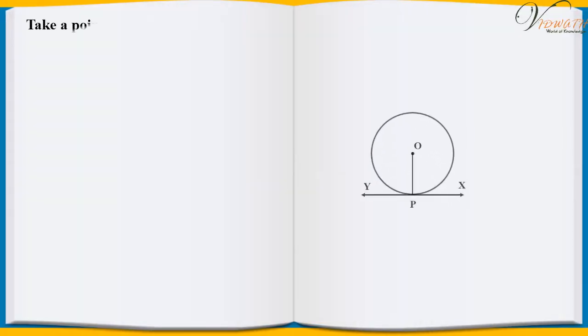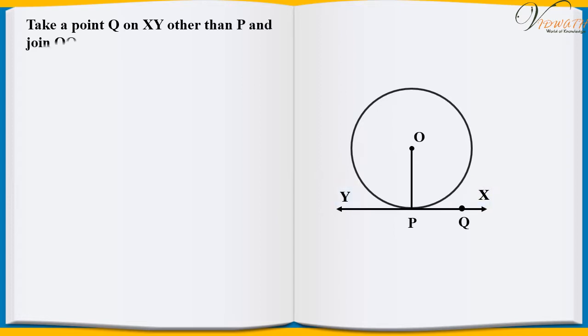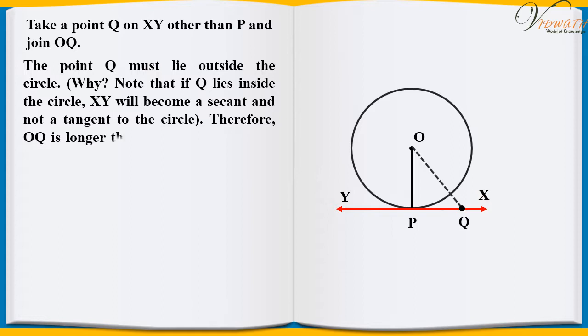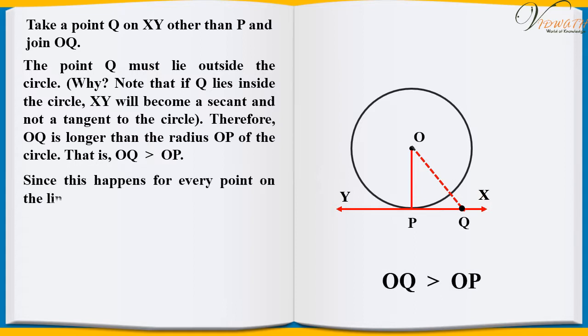Take a point Q on XY other than P and join OQ. The point Q must lie outside the circle. Note that if Q lies inside the circle, XY will become a secant and not a tangent to the circle. Therefore, OQ is longer than the radius OP of the circle. That is, OQ is greater than OP.